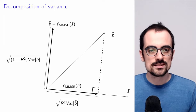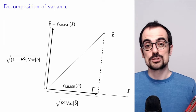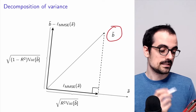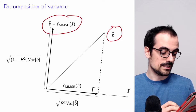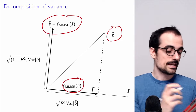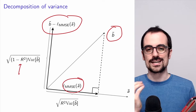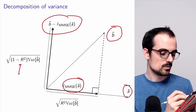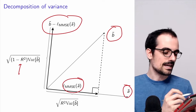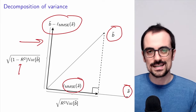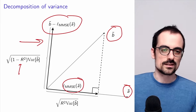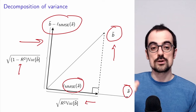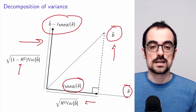In our geometric analogy, this variance decomposition is Pythagoras' theorem: the squared length of B equals the sum of the squared length of the residual and the squared length of the linear estimator. This is governed by the cosine of the angle between B and A, which equals the correlation coefficient. The length of the residual is the square root of (1 minus the cosine squared) times the length of B, and the length of the linear estimator component is the square root of the cosine squared times the length of B.